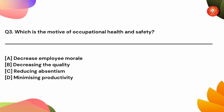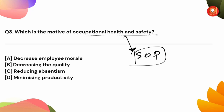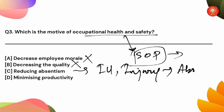Next, question number 3: what is the motive of occupational health and safety? You have to follow standard operating procedures — SOPs-based follow-up is the safety procedure. From the options: decrease employee morale — if we don't follow health and safety procedures, we want to reduce absenteeism. Option C is reducing absenteeism; option D is minimizing productivity.